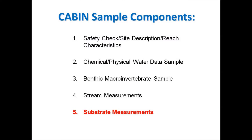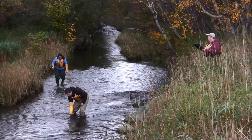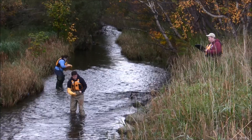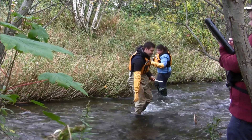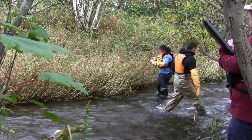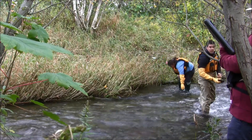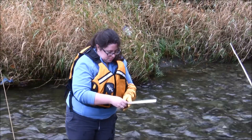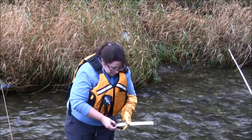Next, we'll take a look at substrate measurements. Throughout the sample area, 100 measurements are taken at random of the substrate on the stream bed. This provides information on the composition of the substrate where the collected bugs were living. The intermediate axis of rocks are measured and recorded, including 10 estimates of embeddedness, or how buried the rock is by other rocks or sediment.